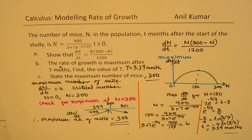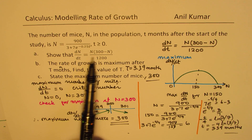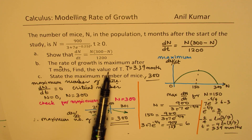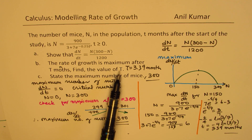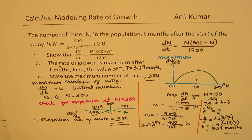I hope all the steps are absolutely clear. We began with the given formula, found the rate of change to match what was given, found the time when we get the maximum rate of change, and lastly found the maximum number of mice by analyzing the first derivative. Hope you find it interesting and useful. Feel free to write your comments and share your views. If you like and subscribe to my videos, that would be great. Thank you and all the best.